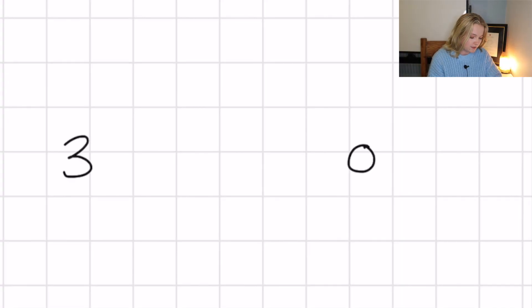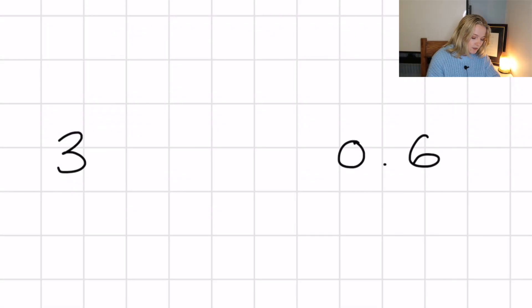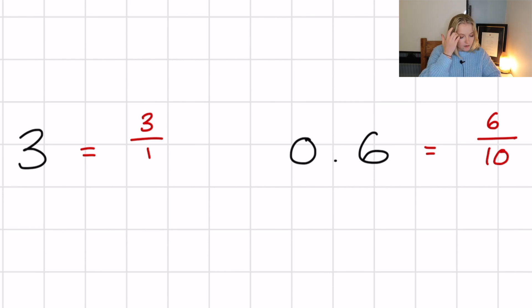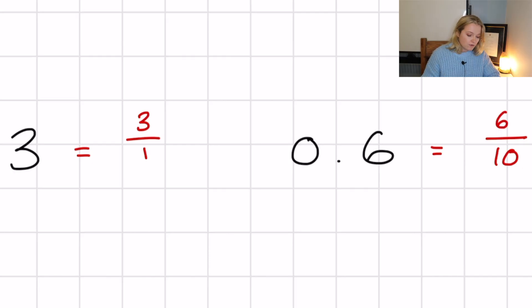What do these numbers have in common? If you said that you can write them as a fraction of whole numbers, you'd be correct. We can write 3 as 3 divided by 1, and 0.6 as 6 divided by 10. These numbers are all known as rational numbers, because you can write them as a ratio of integers — that's where the name comes from.